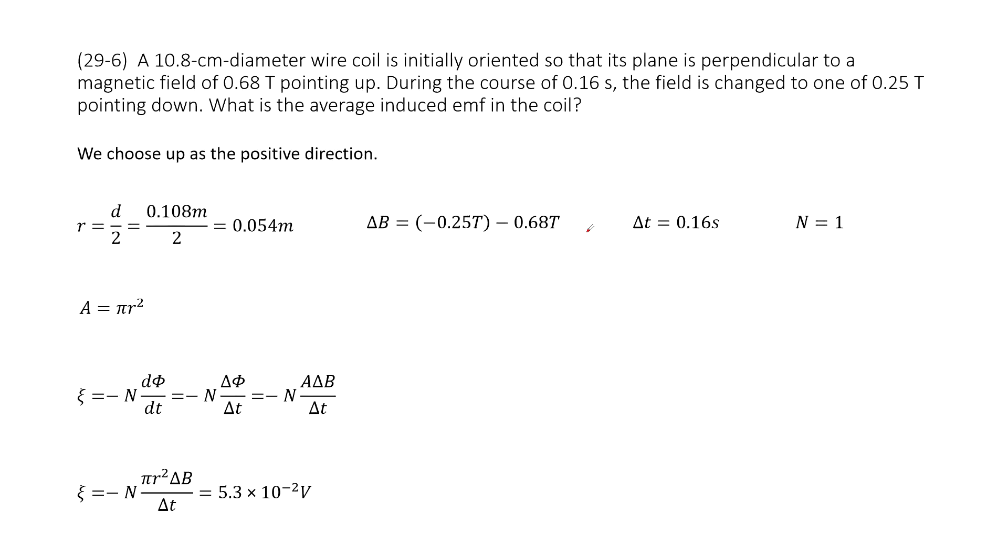The given quantity tells us we have the diameter, so we can convert it to the radius. And then we know the time taking, so we write down the time taking, 0.16 seconds. And then how many turns on our coil? It is a wire coil, so n equal to 1.